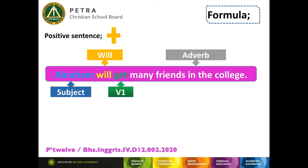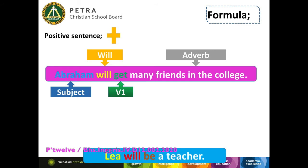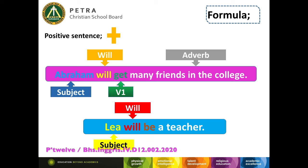And that's 'get.' Many friends in the college as an adverb. Example number two: Leah will be a teacher. Leah is the subject. Will is the modal. And after that, we add 'be,' and 'be' is always followed by a noun.